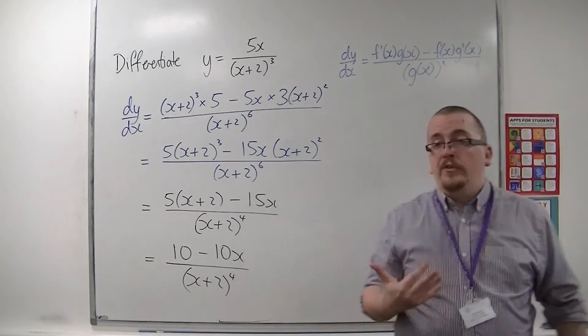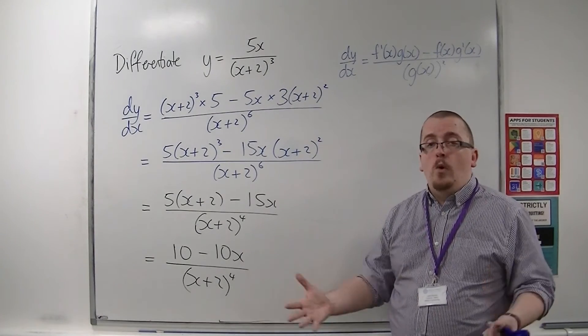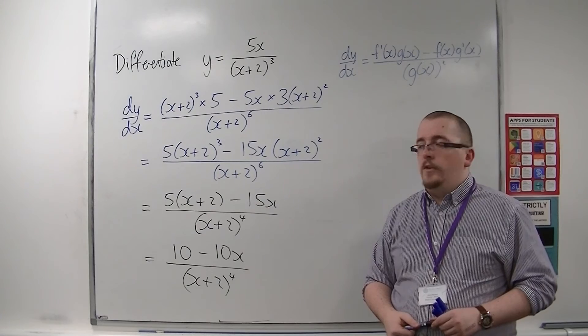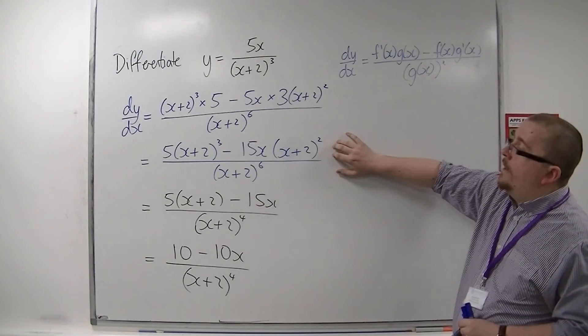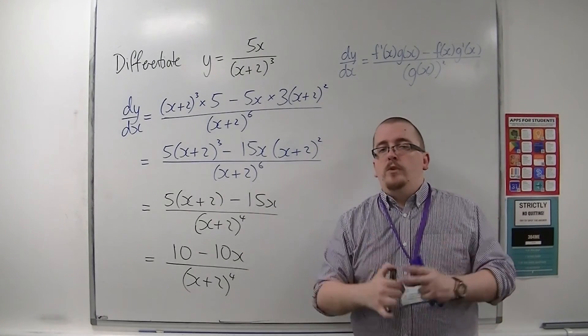Because if I was then asked to find where the stationary points are, I could immediately say that x equals 1 will be one of them. So that is how we do the quotient rule, up to that blue line here, but then simplifying it is really the next step.